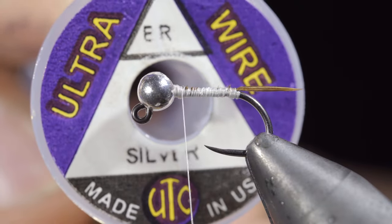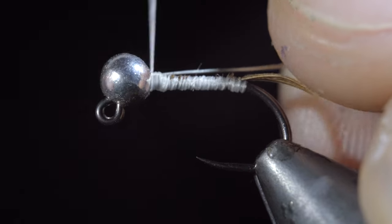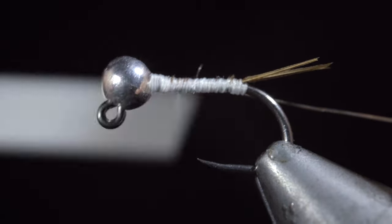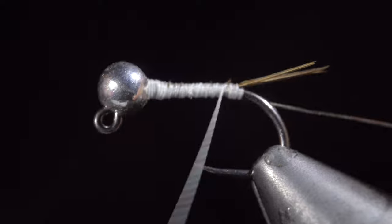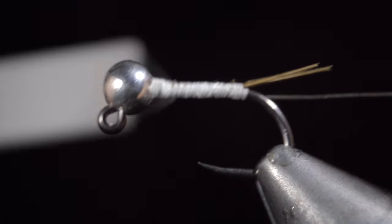We will then grab some silver wire. Here I'm using brassy. Insert that into our bead and secure it wrapping back towards the tail of our fly. And then wrap back up right before our lead-free wire.